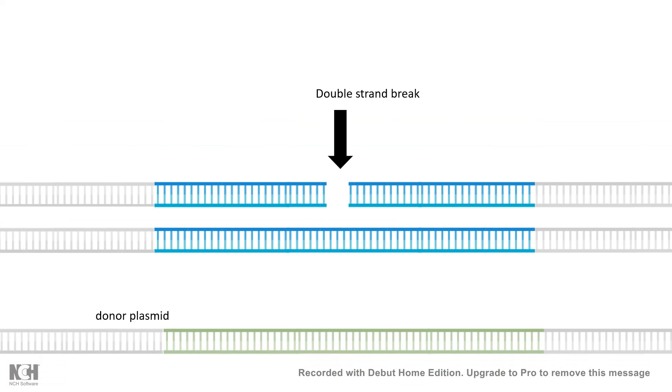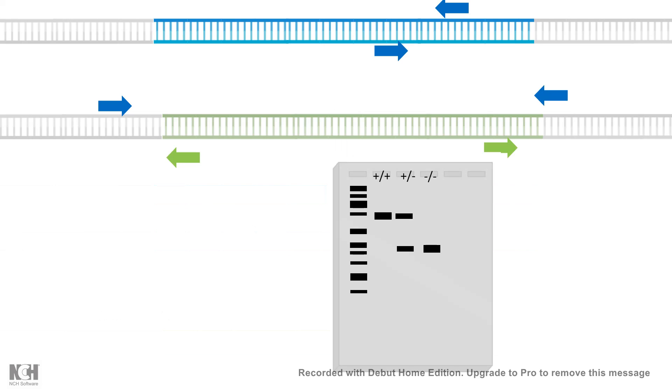Also, the double-stranded break can be repaired by a donor plasmid containing a sequence, let's say GFP or a reporter gene. That is how we can create a knock-in line or knock-in reporter, as if we are genetically tagging that gene or the gene product would be labeled, and that is how we can perform knock-ins.